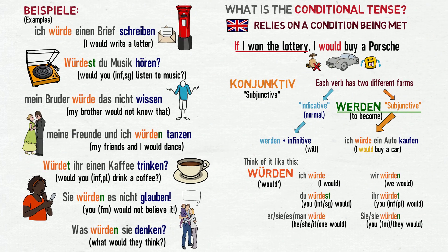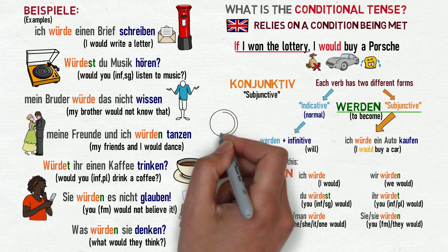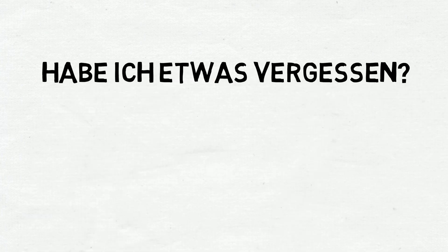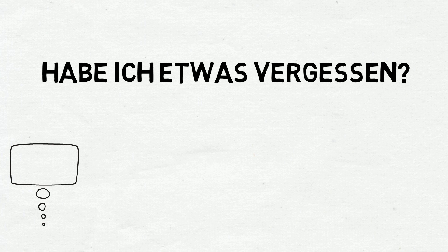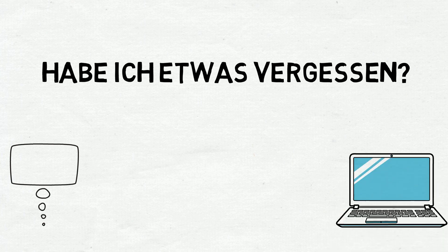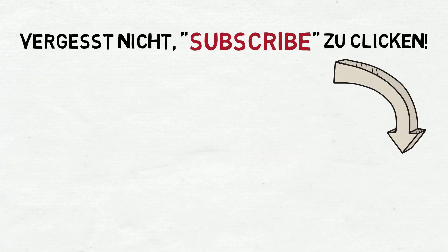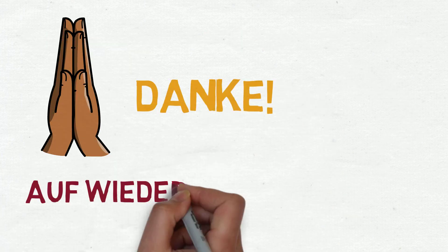So that's how to use the subjunctive with werden to create a conditional sentence. It's a good idea to pause the video now to recap the subjunctive or conditional forms of werden, and how to use this to make 'would' sentences. Habe ich etwas vergessen? If you're a native German speaker and think I've forgotten something important, please let me know in the comments — bitte schreibt einen Kommentar. Please don't forget to click subscribe to receive all of my German lesson videos, language learning tips and updates. To move on to the second part of this lesson about the subjunctive with haben and sein, please click the thumbnail in the video. Otherwise, from me, it's danke und auf Wiedersehen.